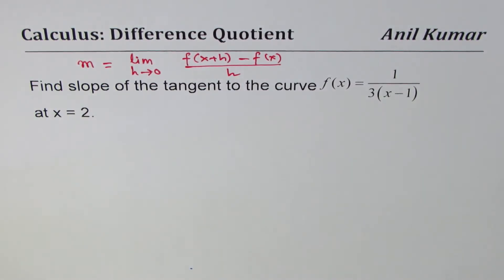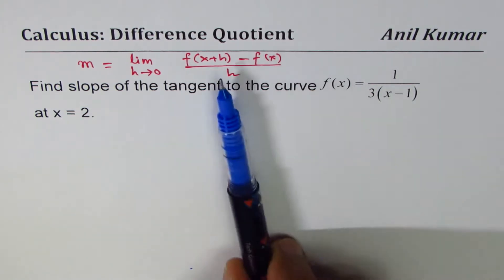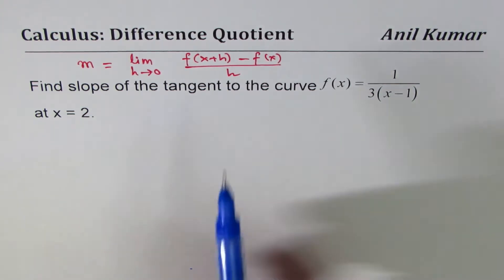Question is: find slope of tangent to the curve f(x) = 1/(3(x-1)) at x = 2. So let's apply this formula and find the slope.